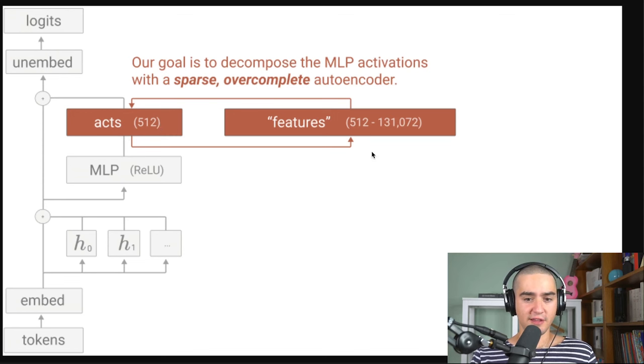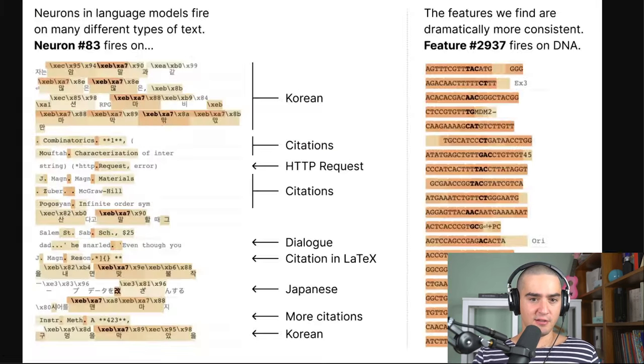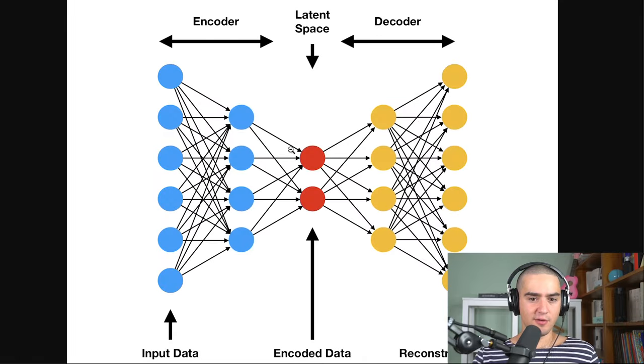What they do is they look at these activations, this 512. So this is just like the number of neurons that are activated. And they do this autoencoder thing to get these features. And they say the autoencoder they use is sparse and overcomplete. So it's important to look at it a little bit. So instead of having this thing here, which is like a small number, here on the left, they got like 512. And here they have a bigger thing in the middle, okay?